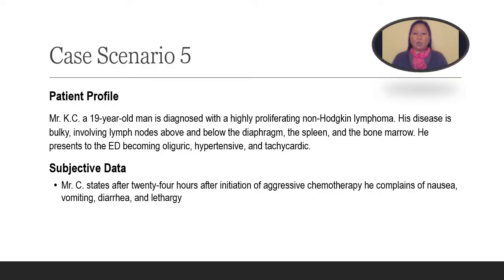Thanks for coming back. I hope those questions in the last case scenario weren't too hard. For case scenario five, we have Mr. C, a 19-year-old man who is diagnosed with a highly proliferating non-Hodgkin lymphoma. His disease is bulky, which involves his lymph nodes above and below the diaphragm, the spleen, and his bone marrow. He presents to the ED becoming oliguric, hypertensive, and tachycardic.